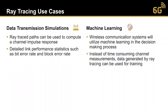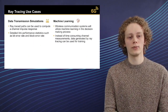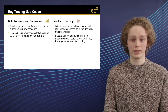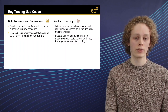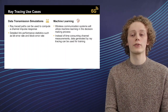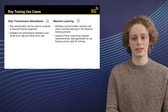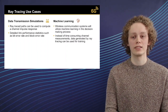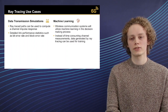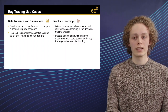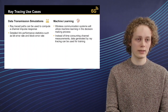Here we have some raytracing use cases. On the left-hand side, we have data transmission simulations — we can use ray-traced paths to compute a channel impulse response, and use this to perform detailed simulations about actual data transmission, getting things like bit error rate and block error rate. Another interesting application is machine learning, as future wireless communication systems will utilize machine learning in the decision-making process. Instead of time-consuming channel measurements, we can generate this data by raytracing and use that for training.